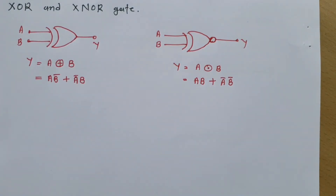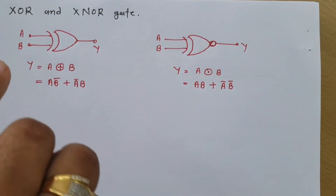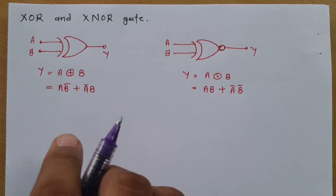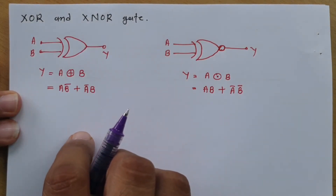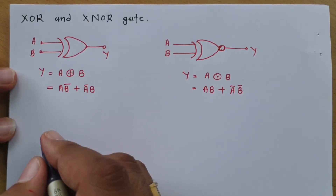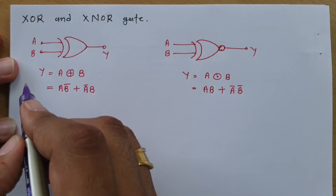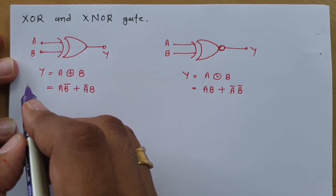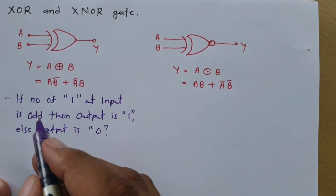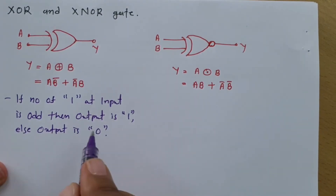Before we go to properties, we should know how both gates function. For XOR gate, the working explains how many 1s are there at the input side. If the number of 1s at input is odd, then our output is 1; else our output is 0.